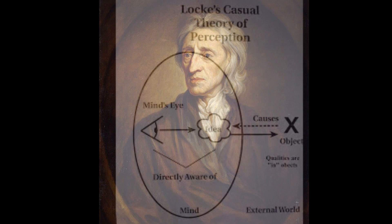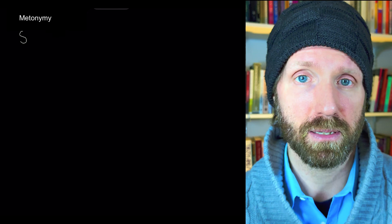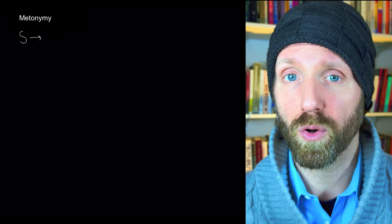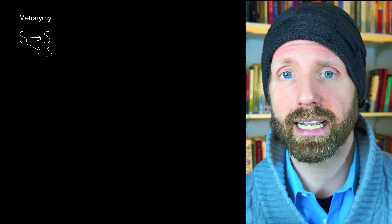The idea of associationism is that the mind operates by making connections among successive presentations of simple sensations and thoughts. These connections form ideas, and ideas come to associate with one another to form organized patterns of thinking. The connective dimension of signifiers is also based on these concrete associations, here named metonymy. Metonymy concerns how one signifier yields to signifiers related to it in terms of their spatial or temporal proximity, rather than their meaning.